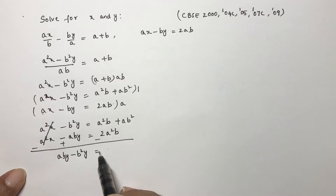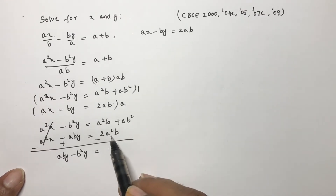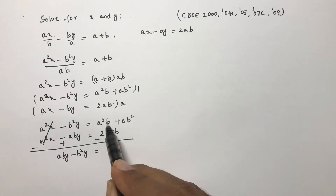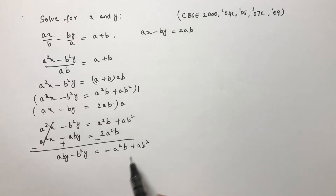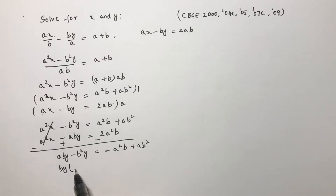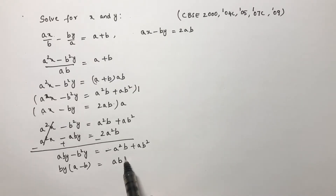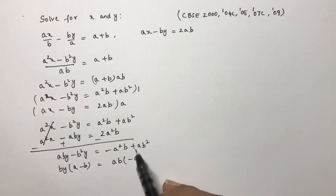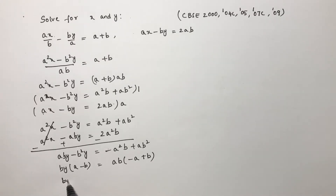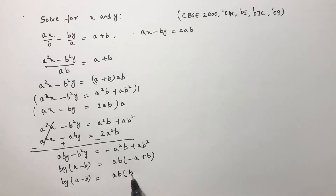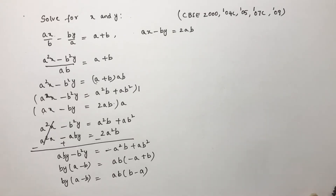After subtraction: ab·y minus b squared y equals a squared b minus 2a squared b, which simplifies to minus a squared b plus ab squared. Taking b·y common, we get b·y times (a minus b) equals ab times (b minus a).